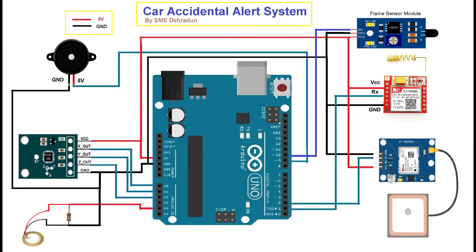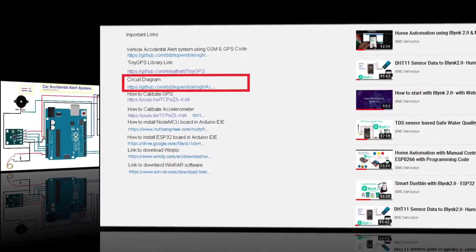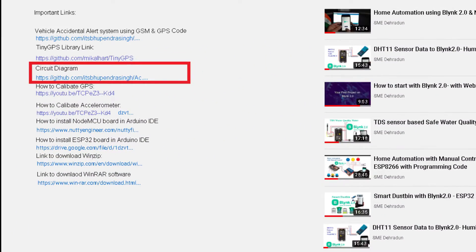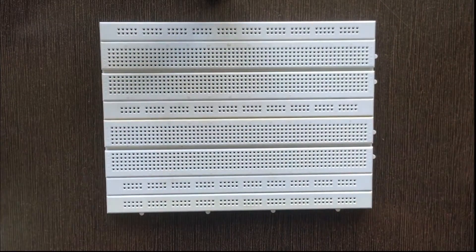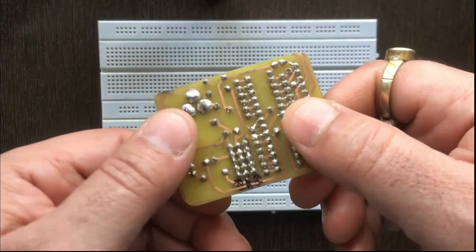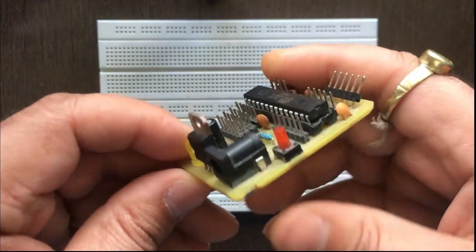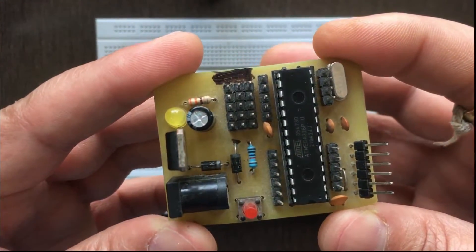Now it's time to connect the hardware with your board. This is the circuit diagram — you need to connect your hardware according to this circuit. I have also added the circuit of the piezo sensor. The link is available in the video description where you can download it. This is a breadboard and this is our customized ATmega328 board that is compatible with Arduino IDE and works as Arduino Uno.